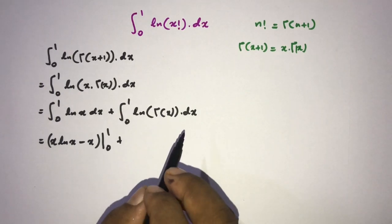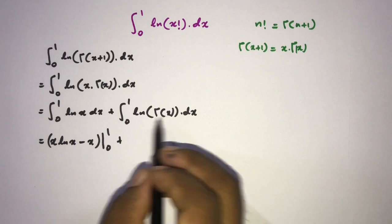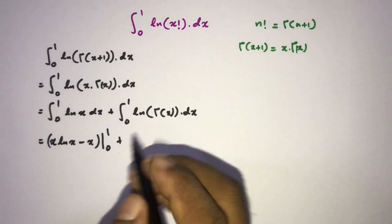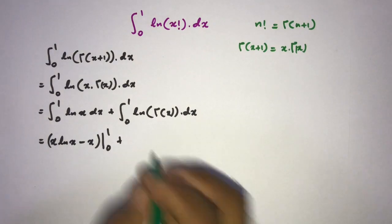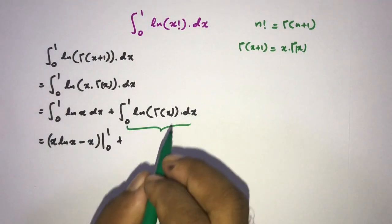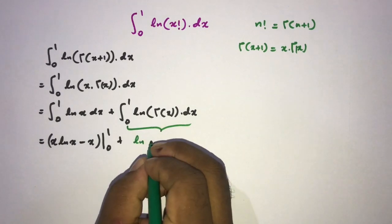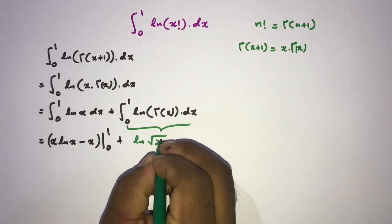We solved this integral in a previous video. If you like to watch this video, I will add the link in the description and also make a card. We know the answer for this integral is natural log of square root of 2 times pi.